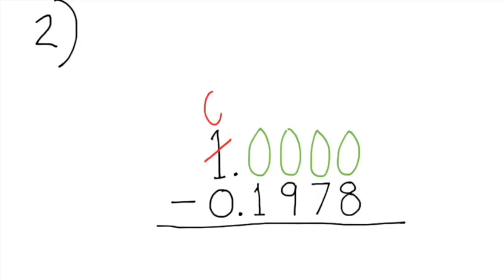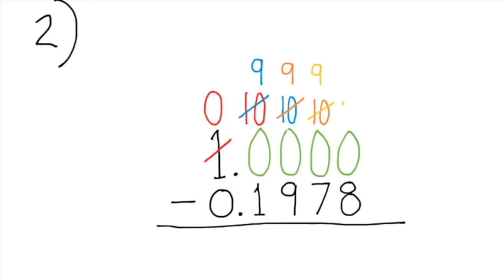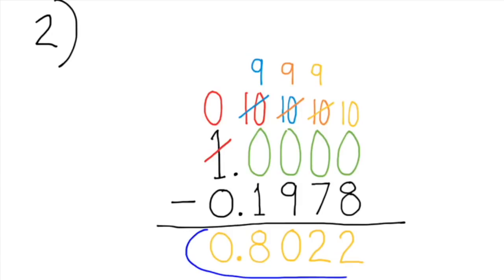Since I can't take away from 0, I start by borrowing from the 1, and then I continue to borrow until I can finally subtract: 8 from 10, 7 from 9, 9 from 9, 1 from 9. My final answer is 8,022 ten-thousandths.